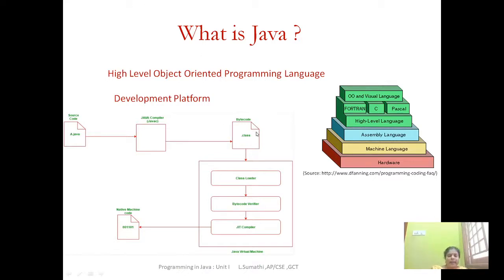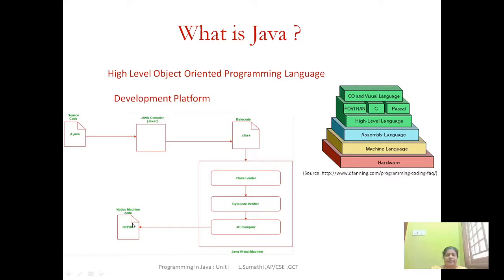This bytecode will then be taken to your JVM. The JVM intakes the bytecode through the class loader and uses the bytecode verifier to check that the bytecodes do not contain any harmful instructions. Then it can use either a compiler or an interpreter — here it uses the just-in-time compiler. The bytecode is then converted to machine code which is ready for execution.